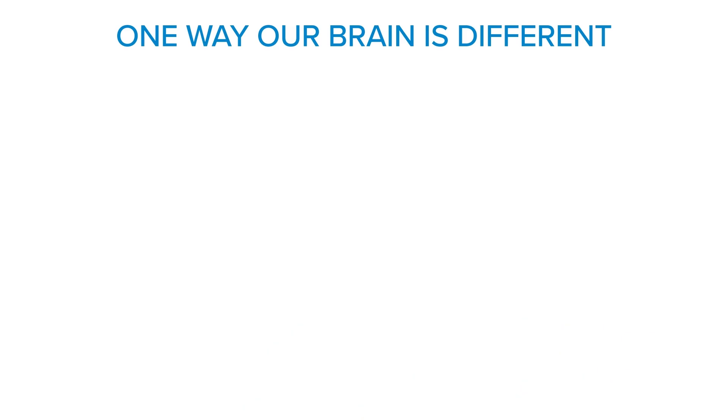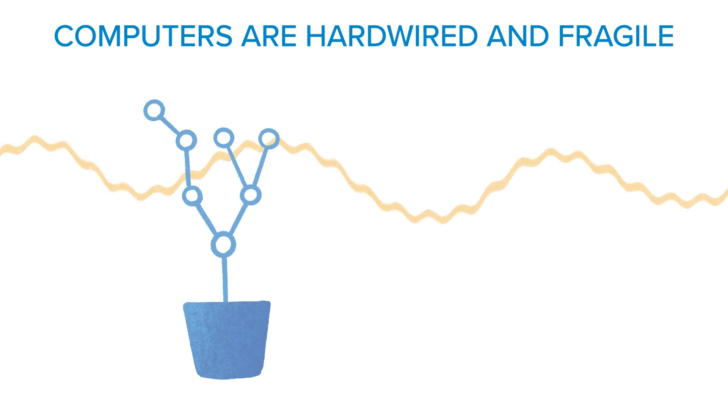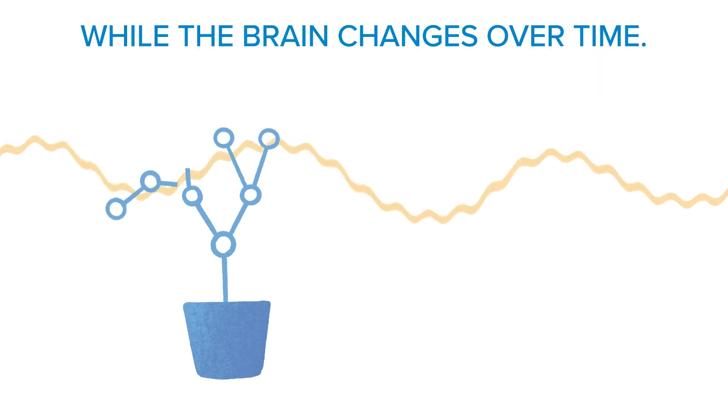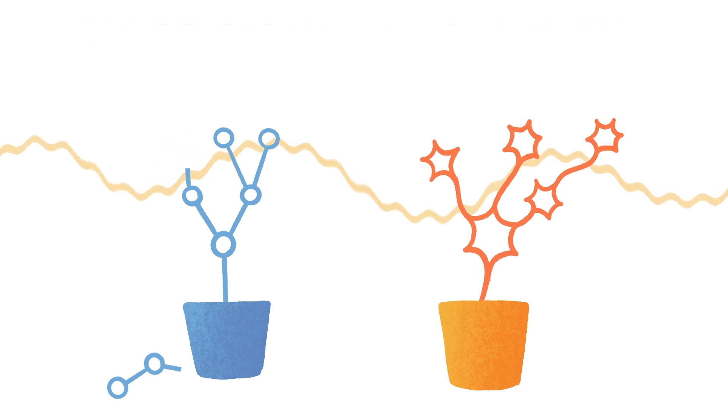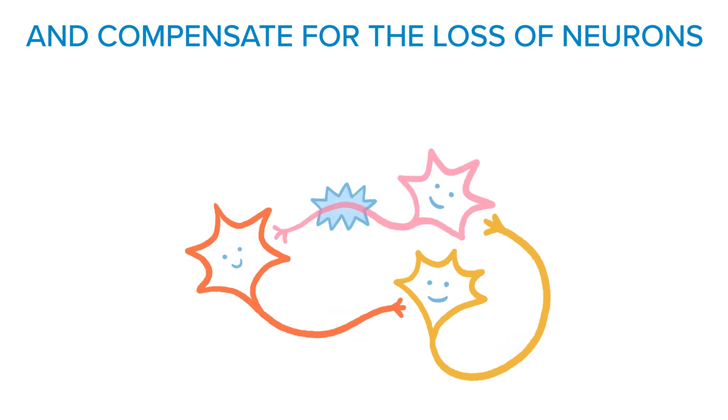One way our brain is different from most computers is that computers are hardwired and fragile, while the brain changes over time. It can adapt to new situations and compensate for the loss of neurons.